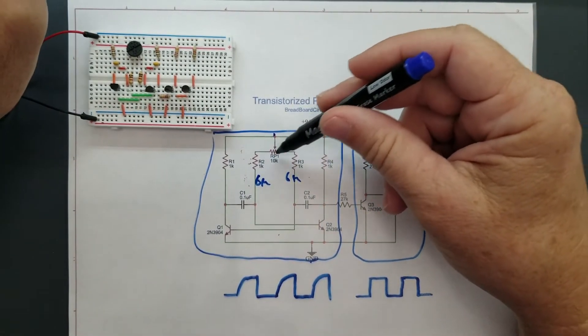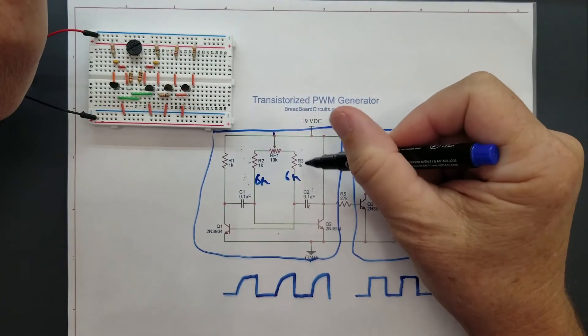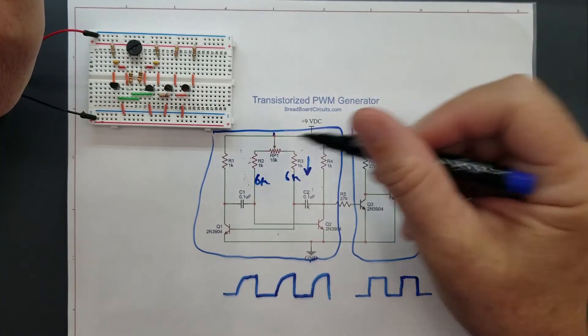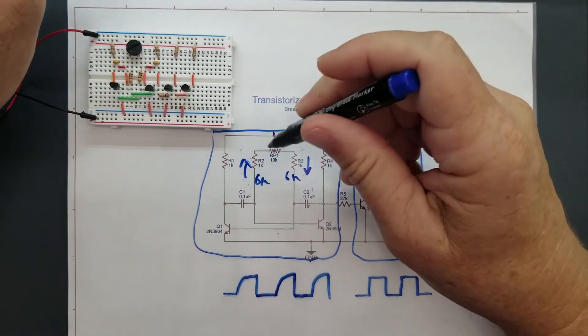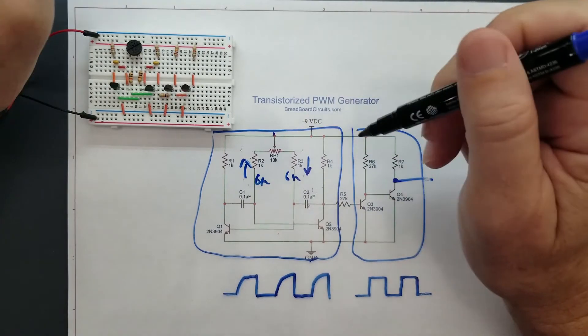And so when you adjust it one way, say if you adjust it this way, this resistance goes down, this resistance goes up. So you're balancing it out by using the pot in this manner.